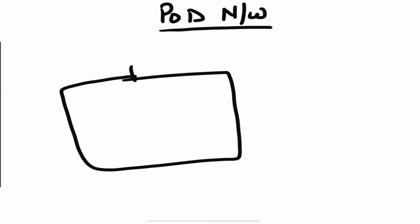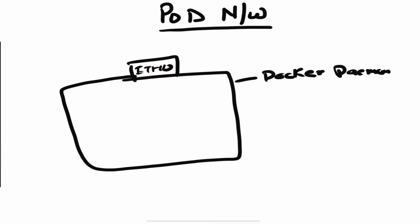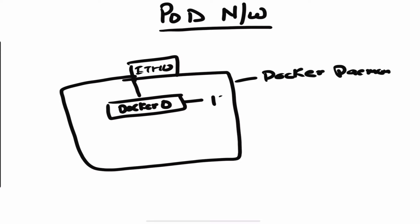Suppose you have your host over here which has an interface called eth0. When you run a Docker daemon on this host, it creates a network called docker0, and this gets an IP address — let's say 172.18.0.1. This is the IP address of this docker0 virtual interface.